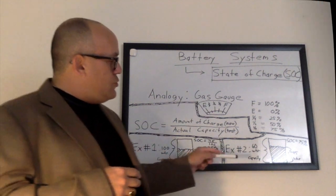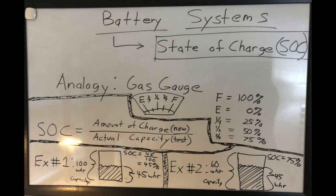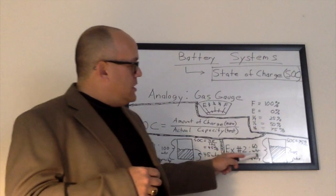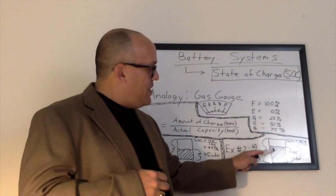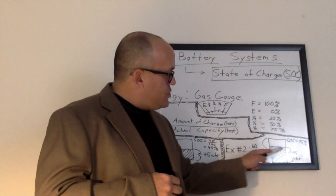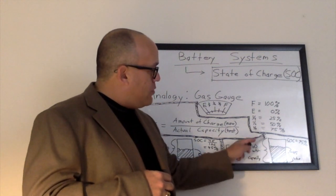Example number two: again, I drew another little gas tank looking thing here with the actual amount of charge in there. So let's say 60 watt hour system capacity with 45 watt hours of charge available now.